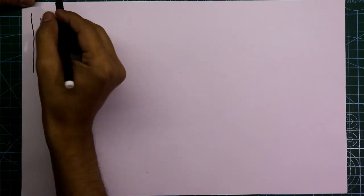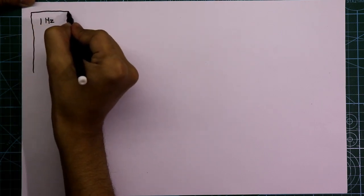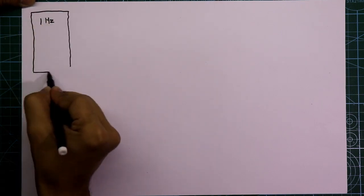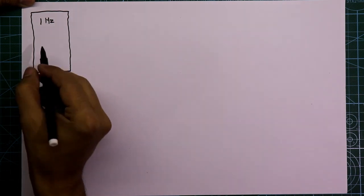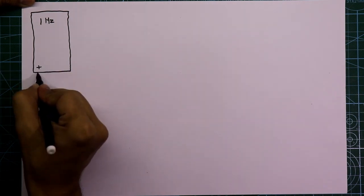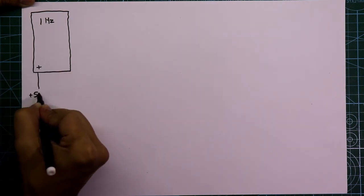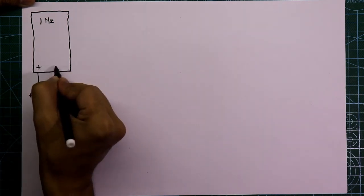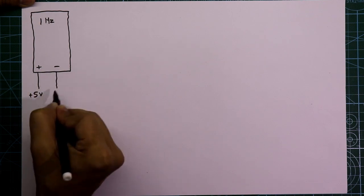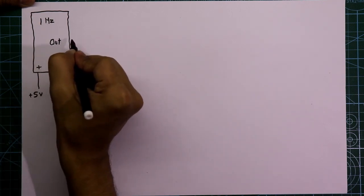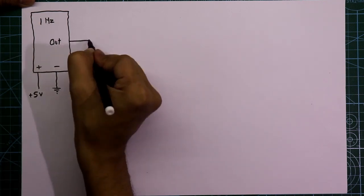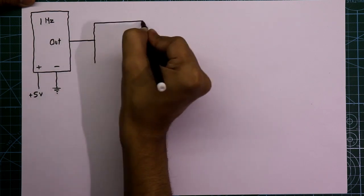I have already explained about this circuit in another video — link in the description below. Its positive pin is connected to plus 5 volts, its negative pin is connected to the ground, and the output of this circuit is connected to pin number 14 of IC 4017.